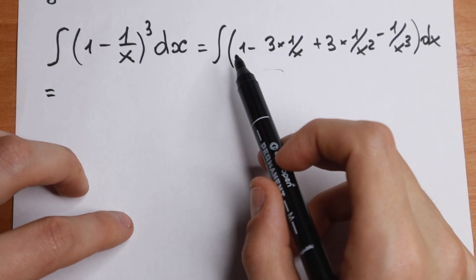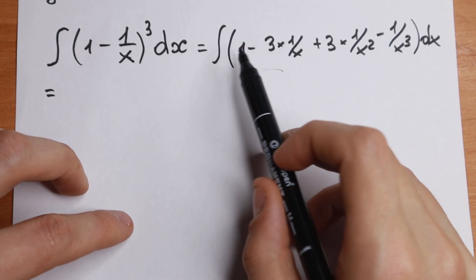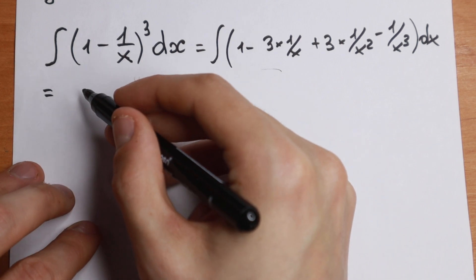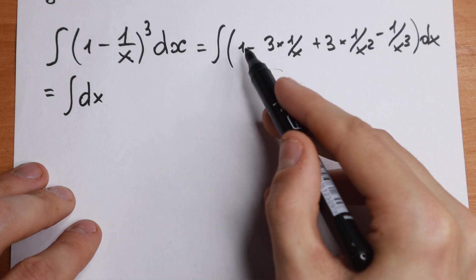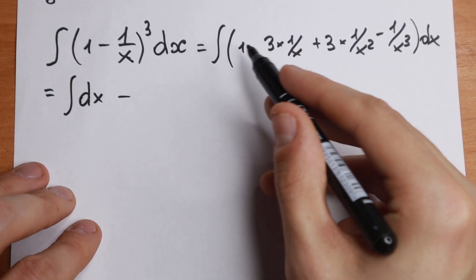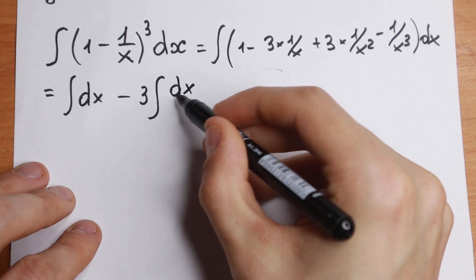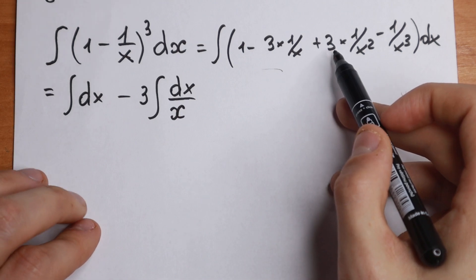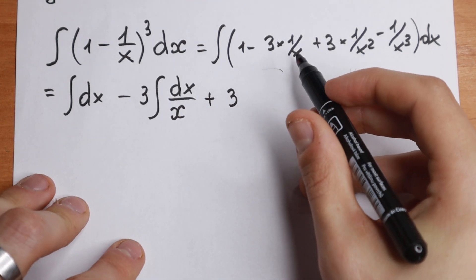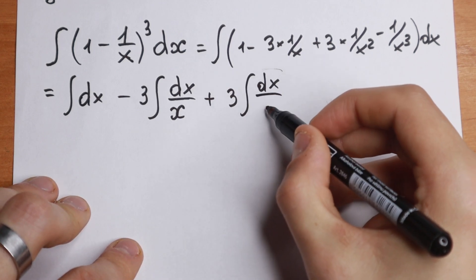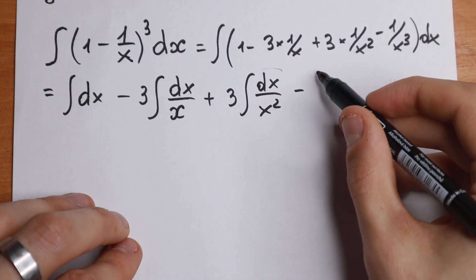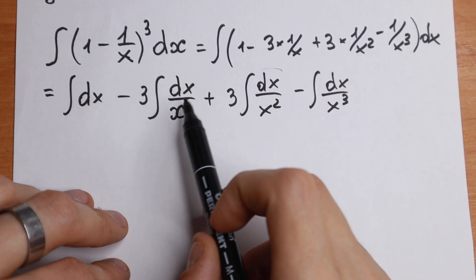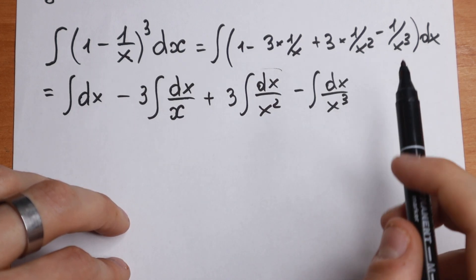Now, because we have an integral of a sum and subtraction, we can integrate each element separately. So we will have: integral of dx, minus 3 times the integral of dx/x, plus 3 times the integral of dx/x², and minus the integral of dx/x³. We just split and simplify.